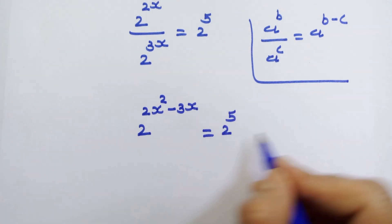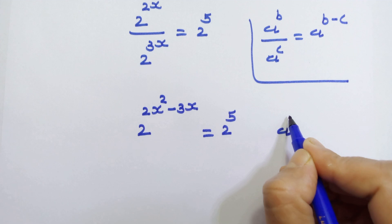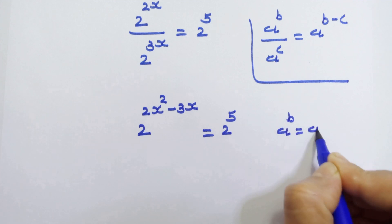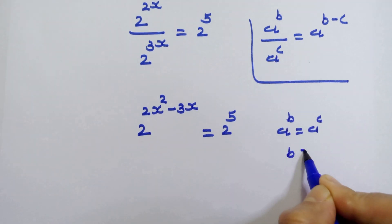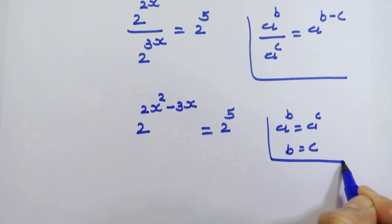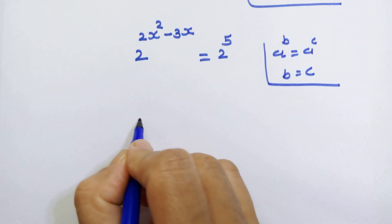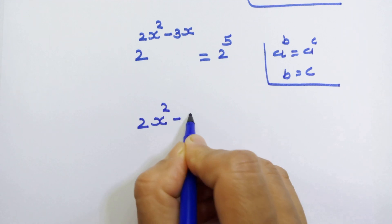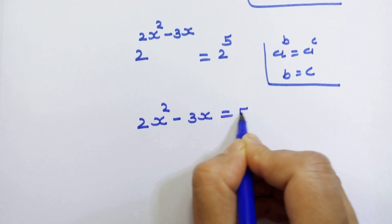Now we have the same base at both the sides. So if we have a raised to b is equal to a raised to c then we can equate the exponents b is equal to c. By using this rule here we can write 2x square minus 3x is equal to 5.